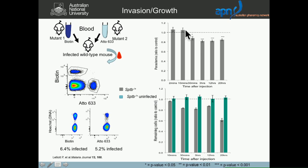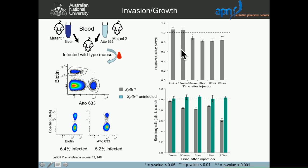We were quite surprised because nothing happened early on — that means the invasion is not affected. Something happens later, which could be the growth. But we looked at the remaining red cells, and what happened is the uninfected mutant red cells drop in number straight away, whereas they are not infected. So that means growth is certainly not the mechanism — it's something else, not growth or invasion. We were quite disappointed because I don't have my small experiment to publish my paper, so I have to do a little bit more work.